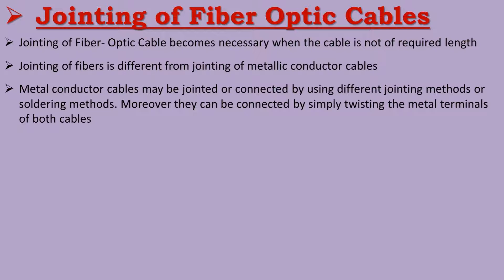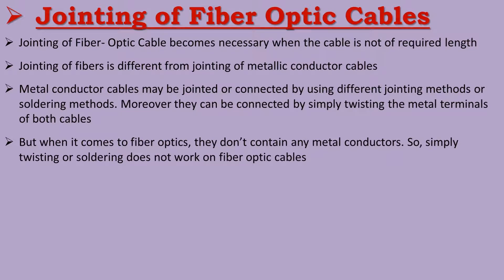For metal conductor cables, it is simple — you twist the metal conductors together to join them. When the conductors touch, electrons flow through the joint. However, fiber optic cables do not use metal conducting materials; they use glass, and they carry light rather than electrical current. So twisting does not work for fiber optic cables.